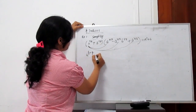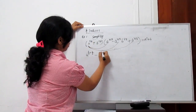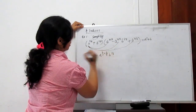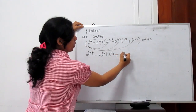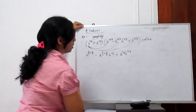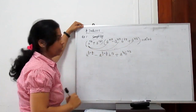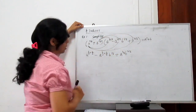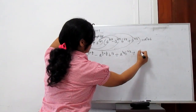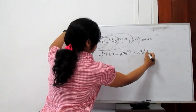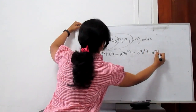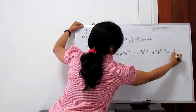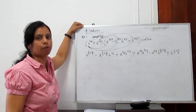Expanding: A to the power 2 by 3 times A to the power 4 by 3, minus A to the power 2 by 3 times A to the power 2 by 3 times B to the power 1 by 3, plus A to the power 2 by 3 times B to the power 2 by 3. Then B to the power 1 by 3 times A to the power 4 by 3, minus A to the power 2 by 3 times B to the power 1 by 3, plus B to the power 1 by 3 plus 2 by 3.